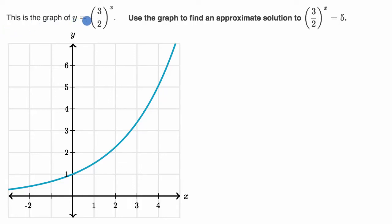We're told this is the graph of y equals three halves to the x, and that's it right over there. Use the graph to find an approximate solution to three halves to the x equals five.